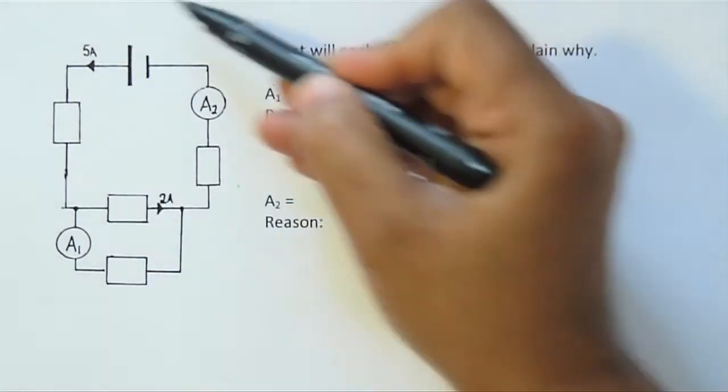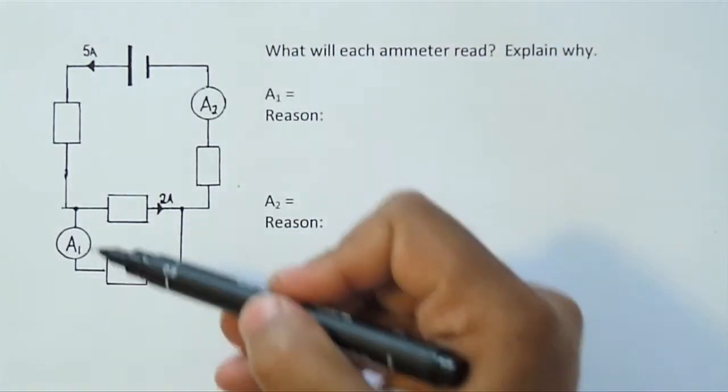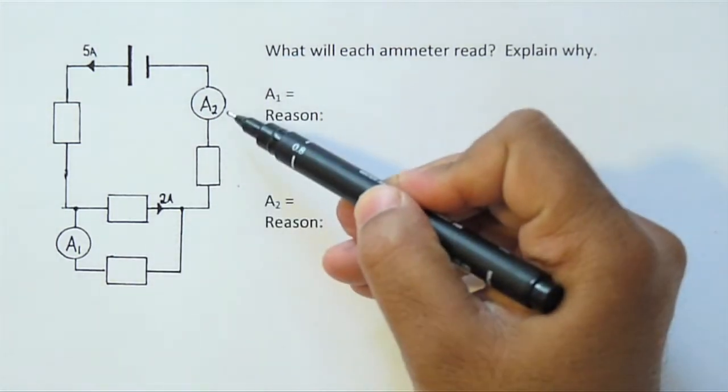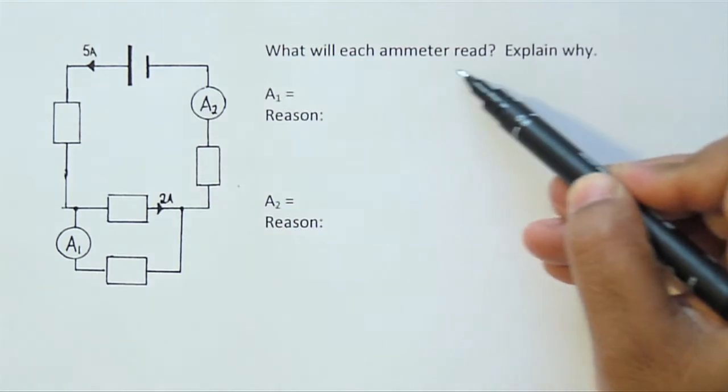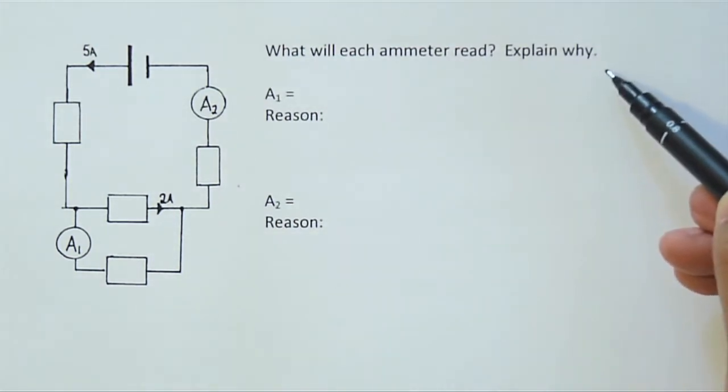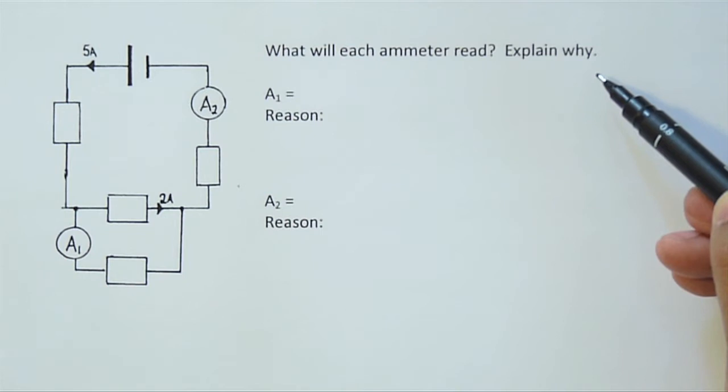What we've got here is a rather intimidating looking circuit diagram with an ammeter here and an ammeter here, and the question is what will each ammeter read and explain why. First thing to do is look at the information on the diagram.